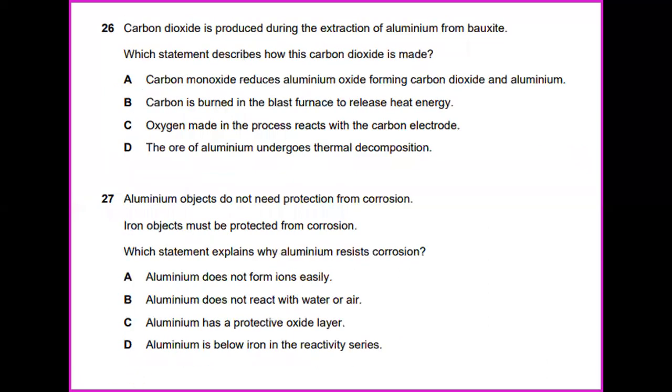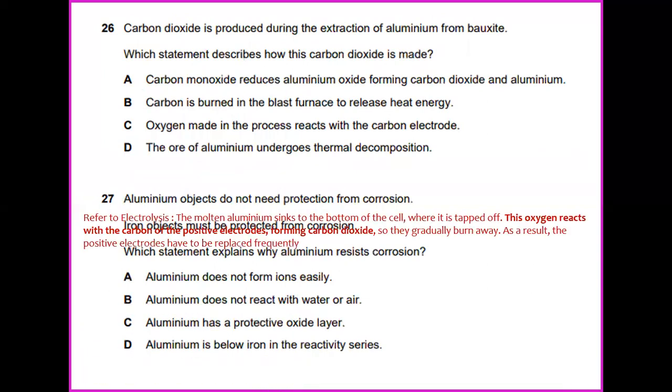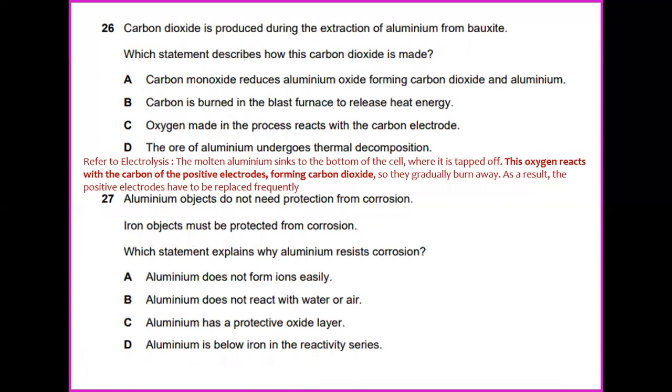Carbon dioxide is produced during the extraction of aluminum from bauxite. Which statement describes how this carbon dioxide is made? Refer to electrolysis. The molten aluminum sinks to the bottom of the cell where it is tapped off. This oxygen reacts with the carbon of the positive electrode forming carbon dioxide, and so they gradually, by the way, as a result, the positive electrode has to be replaced frequently.